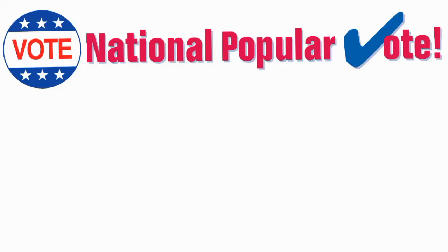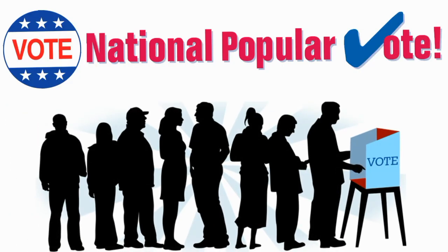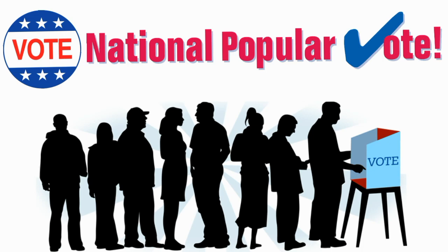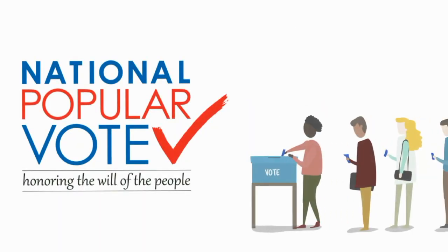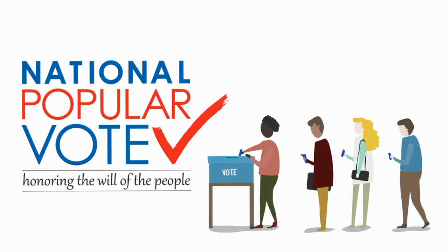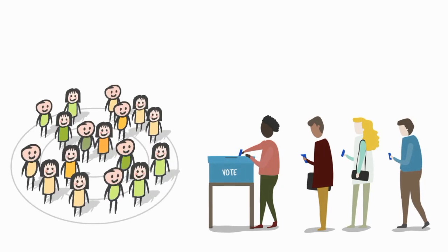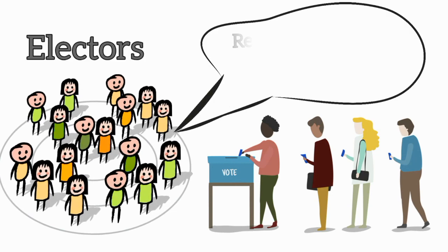The general election, also known as the popular vote, usually happens in November of the election year. In the general election, all eligible voters in every state across the country who are above 18 years will vote for one president and one vice president. However, they will not be voting directly for the president or vice president — rather, they will be voting for a group of people known as electors.